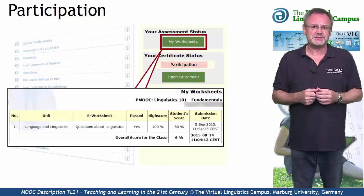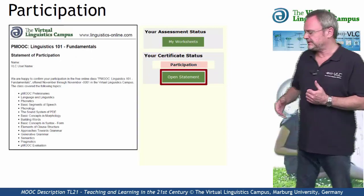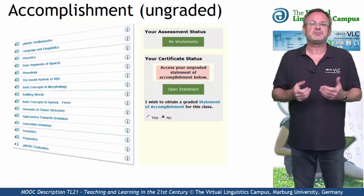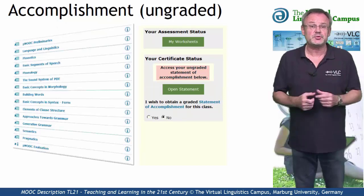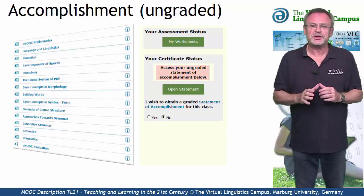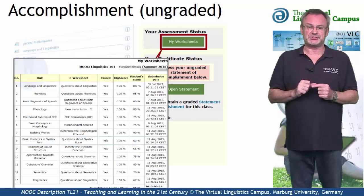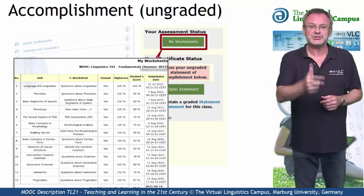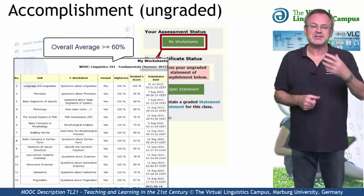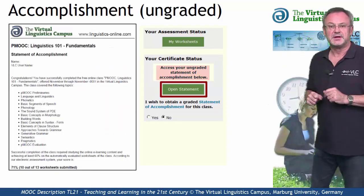Once you have successfully submitted a worksheet, you will be eligible for such a certificate and can open it by hitting the 'Open Statement' button. The second option is the statement of accomplishment, also for free and issued by the Virtual Linguistics Campus. To be given such a certificate, we not only want your regular participation, but we also want you to do the mastery worksheets — our electronic tests, one for each unit — and we want you to achieve an overall score of at least 60%. A simple click on the 'Open Statement' button and the certificate is yours.